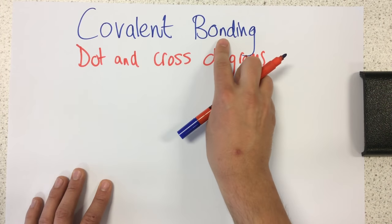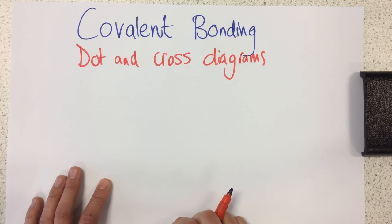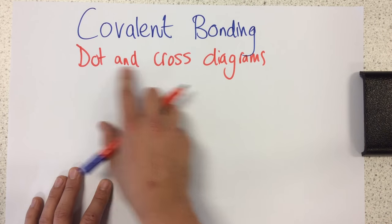Today I'm going to talk to you about covalent bonding, but a particular skill about covalent bonding of how to draw dot and cross diagrams.